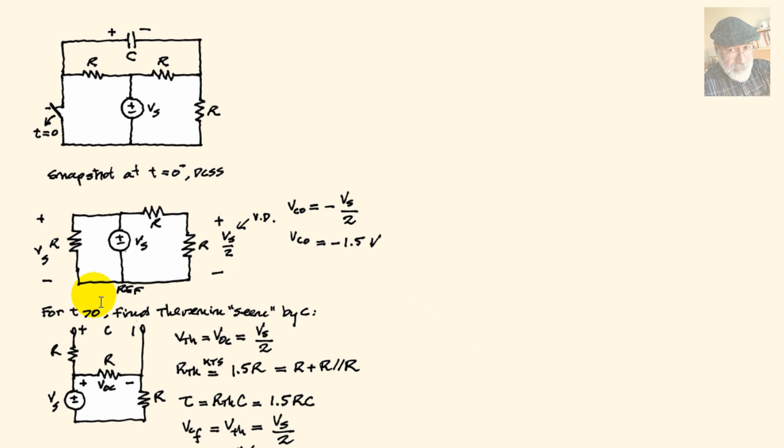Now let's go for the second part of the exam. For t greater than zero, that is after we open the switch, we want to find what is the voltage in the capacitor as a function of time. And for that, as we did in class and in the tutorials, we will find, first, what is the Thevenin equivalent circuit seen by the capacitor.